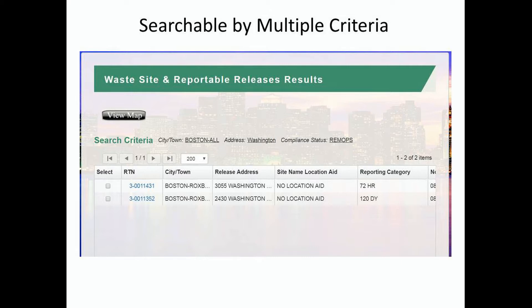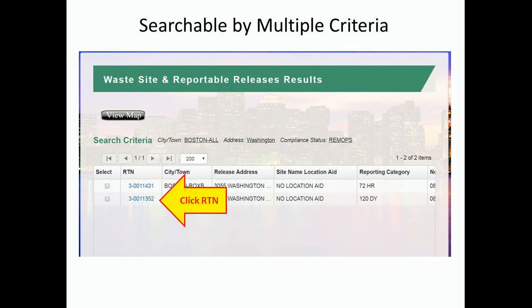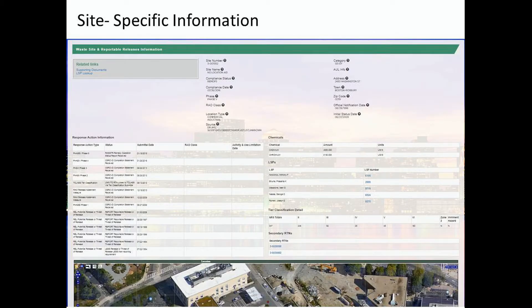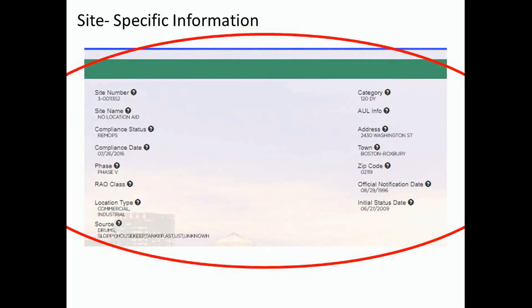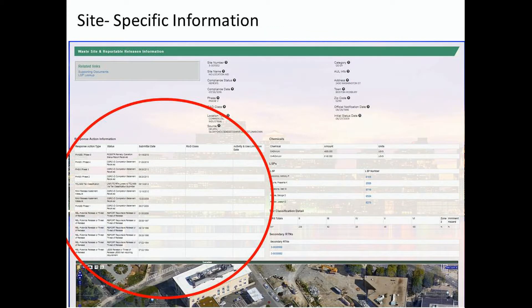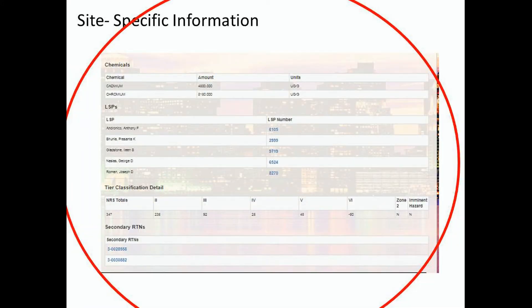You'll notice that the release tracking number, or RTN, on the left-hand side of the list is a hyperlink. So let's click on one and go to the site's information summary page. The print is small, so we'll zoom in on each of the three sections to see what's there. You'll see information about the site from our database — things such as the compliance status or, when known, the source of the contamination. You'll also see information about response actions — activities that have taken place for the site, including whether an audit has been conducted by MassDEP. There's also information about the chemicals reported at the site, and links to information about the licensed site professional, or LSP, who's working on the case.